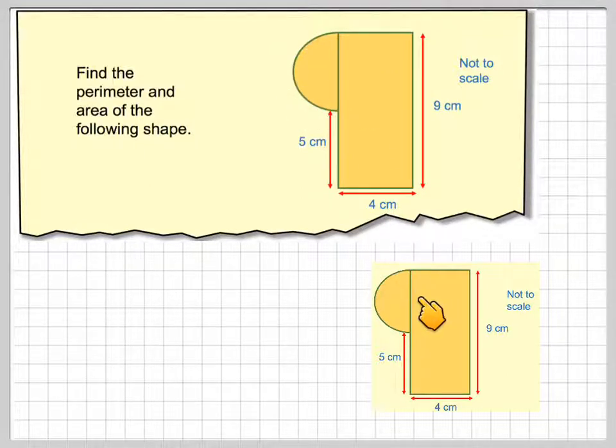Now what we need to be able to find is this distance here, which is the diameter of the semicircle. But we know this distance here is 9, and this distance here is 5. Therefore this distance here must be 9 minus 5, which is 4 cm.